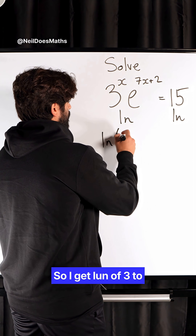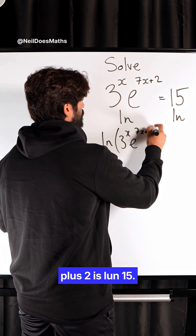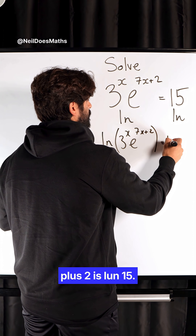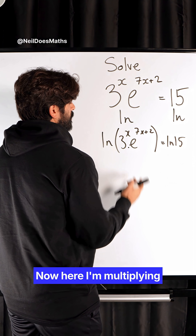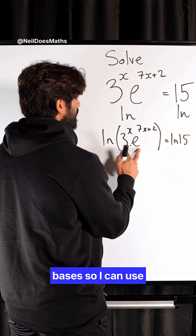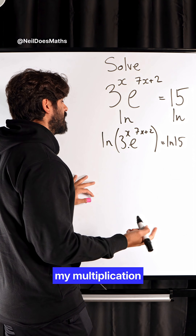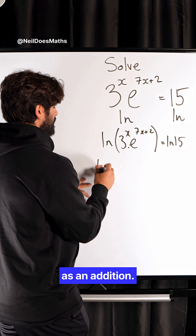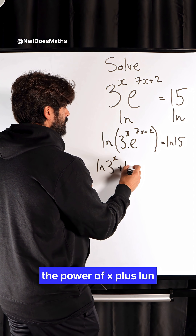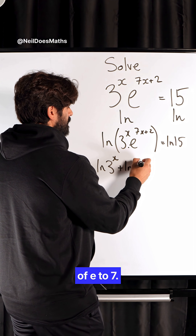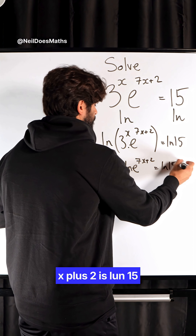So, I get ln of 3 to the power of x times e to the 7x plus 2, equals ln 15. Now, here, I'm multiplying two numbers with bases, so I can use my multiplication rule and rewrite this as an addition. I get ln of 3 to the power of x plus ln of e to the 7x plus 2, equals ln 15.